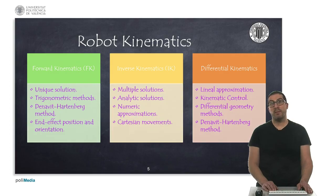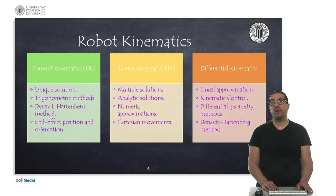Differential kinematics, on the other hand, produces a linear transformation of the robot kinematics, and therefore it is usually used in kinematic robot control. The robot Jacobian can be obtained from the differential geometry methods or also from the results obtained by applying the Denavit-Hartenberg method, as we will see.